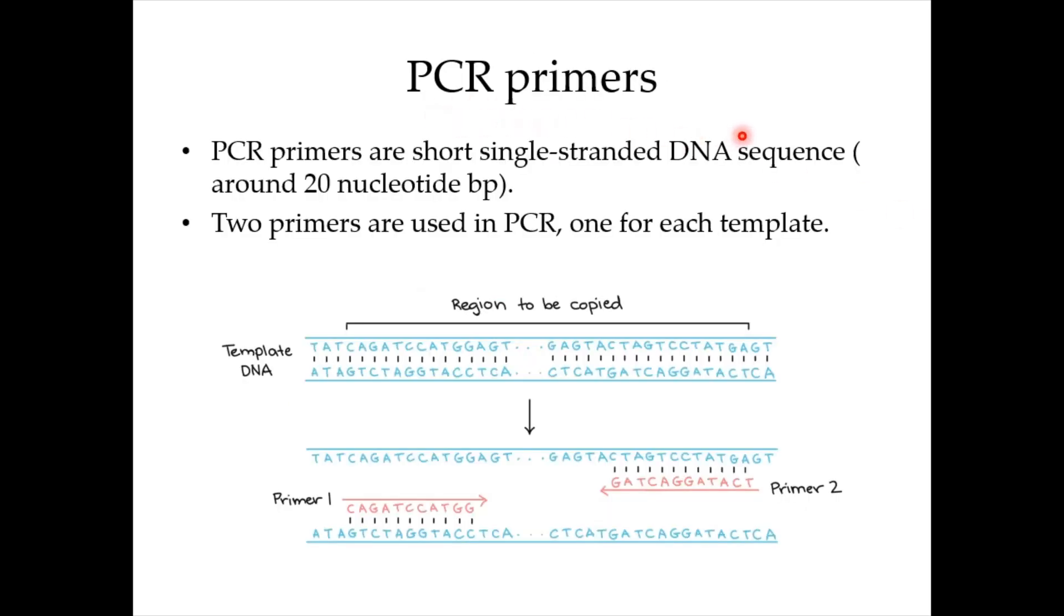PCR primers are short single-stranded DNA sequences which are around 20 nucleotide base pairs. Two primers are used in PCR, one for each template. As you can see in the diagram, this is the template DNA. As the template DNA separates, each primer would attach to each template of DNA.